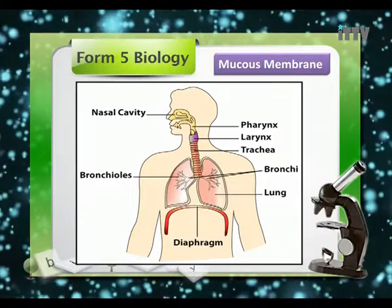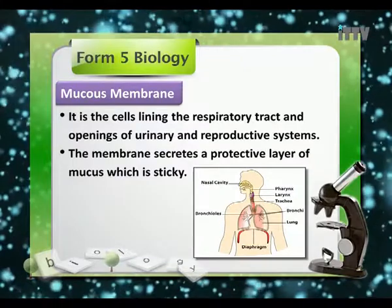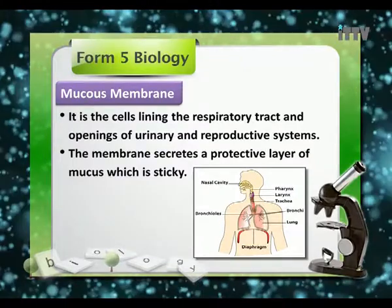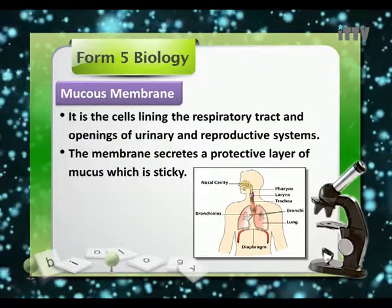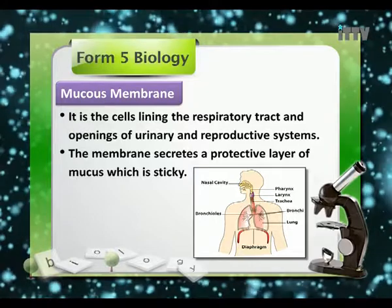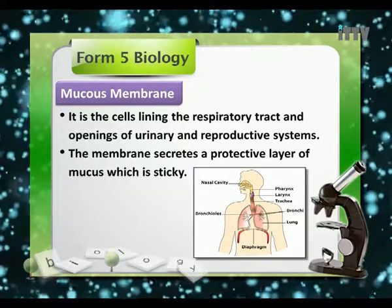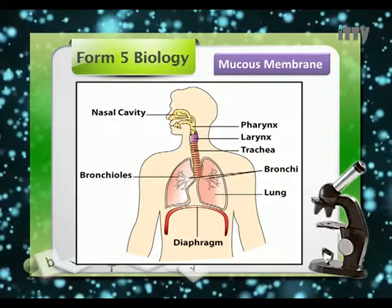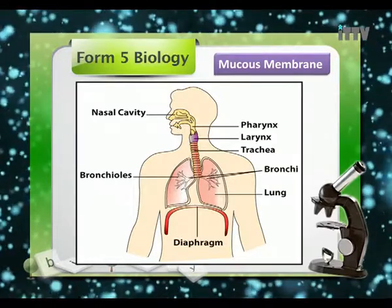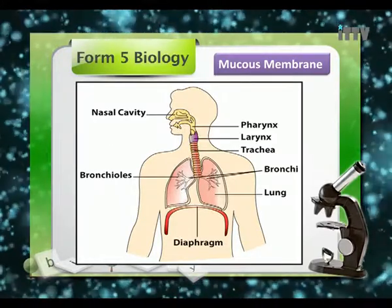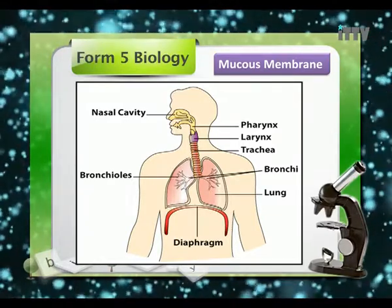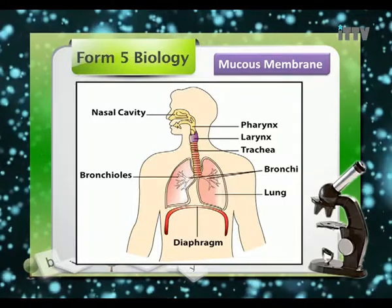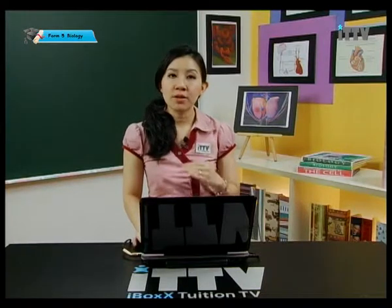Referring to the diagram of the mucous membrane: the mucous membrane refers to cells lining the respiratory tract, and the openings of the urinary and reproductive systems. The membrane secretes a protective layer of mucus which is very sticky. We have mucous membrane lining our respiratory tract from the pharynx to the trachea, bronchi, bronchioles, and the lungs. This is still considered the first line of defense.